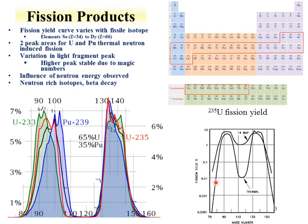One can also vary the fission process by changing neutron energy. Shown here is the fission process for thermal versus fast neutrons. The peaks don't change dramatically, though there's a slight decrease in the higher peak and a noticeable increase in the valley peak. There is some influence on fission product yields based on neutron energy and fissile material, but primarily fission products are produced by fissioning uranium-235. Since fission products come from heavy elements, they tend to be neutron-rich isotopes that undergo beta decay. Molybdenum-99 beta decays to technetium-99m, which goes to the ground state technetium-99, which then decays to ruthenium-99.